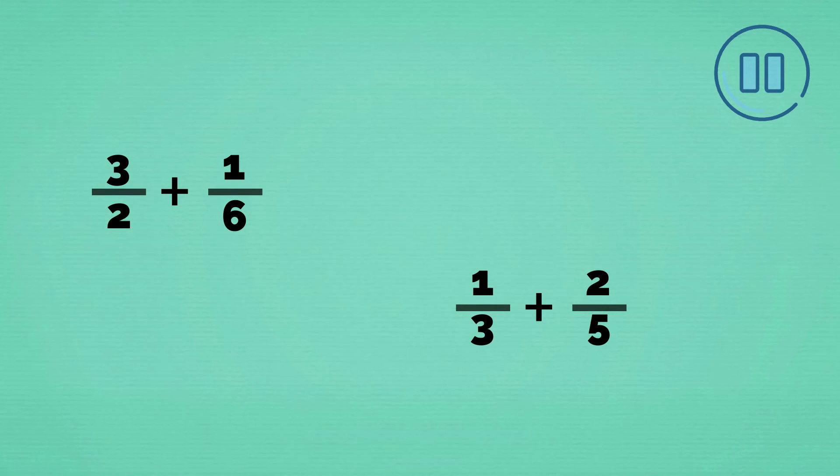Let's see how you went. The first one. These two are related fractions. We can multiply 2 by 3 to convert this fraction to 6ths. Multiplying the top number by 3, we get 9. 9 6ths. 9 6ths plus 1 6th equals 10 6ths.